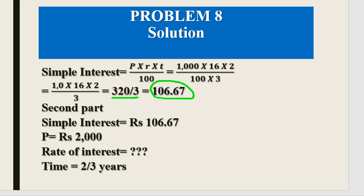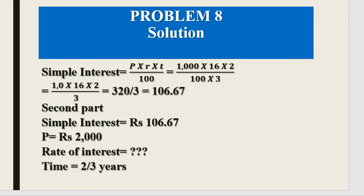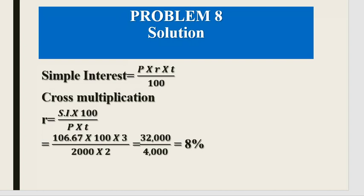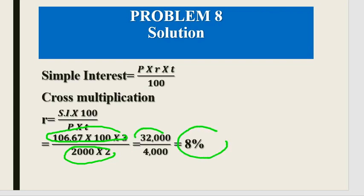In the second part, if Ram had borrowed double the amount — Rs. 2,000 — and paid the same interest of Rs. 106.67 over the same 8 months (2/3 years), what is the new rate of interest? Using Rate = (SI × 100) / (Principal × Time) = (106.67 × 100) / (2,000 × 2/3) = 10,667 / (4,000/3) = 10,667 × 3 / 4,000 = 32,001 / 4,000 ≈ 8%. So the rate of interest is 8%.